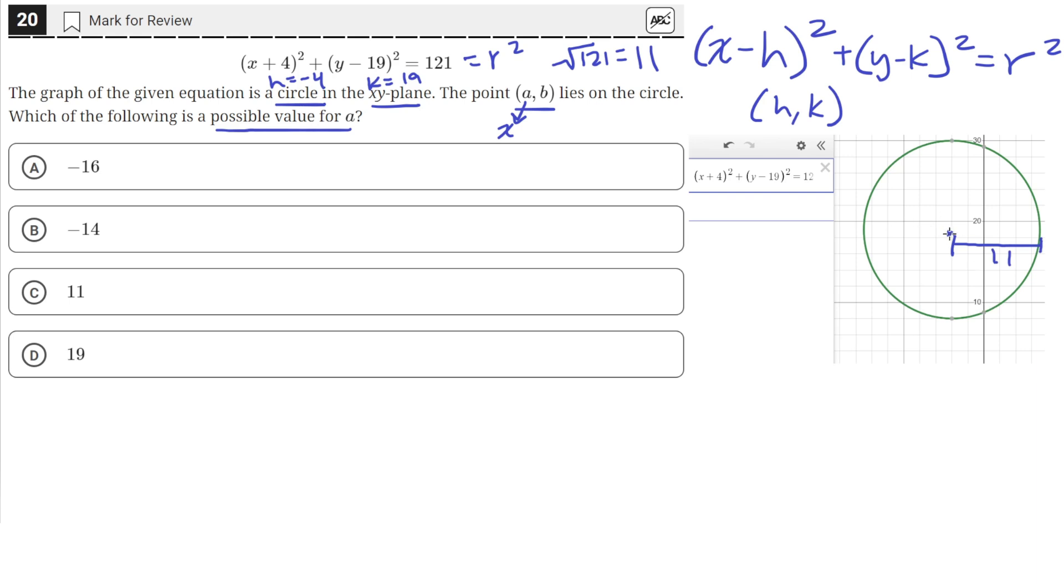At the center, we're at x-coordinate of negative 4. The leftmost edge of the circle is 11 units away from the center. So this distance is 11 units, and we're at negative 4, which means this point is at negative 15.